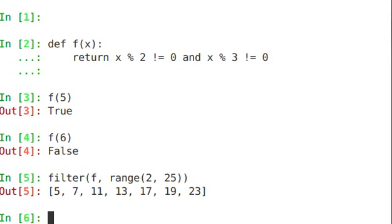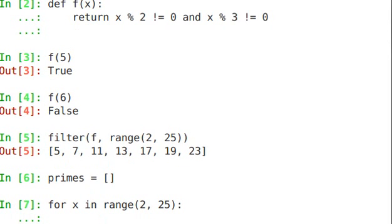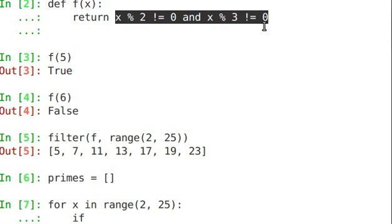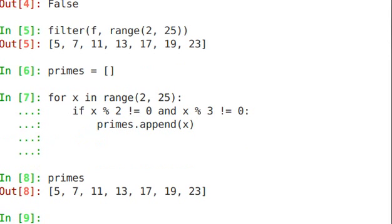Okay, this is the same thing as saying primes, creating an empty list primes, and for x in range 2 to 25, if x is not divisible by 2 and not divisible by 3, primes dot append x. You see we have the same result. It's just that filter was more succinct.